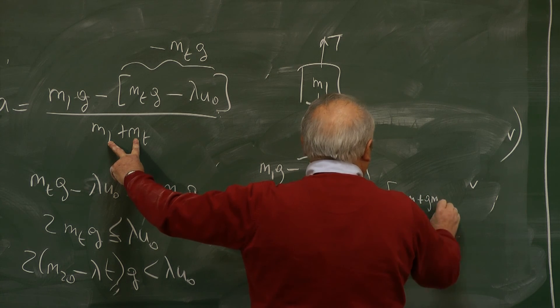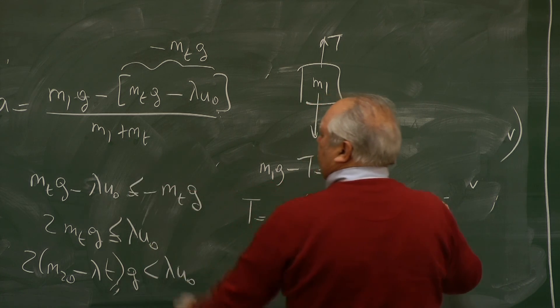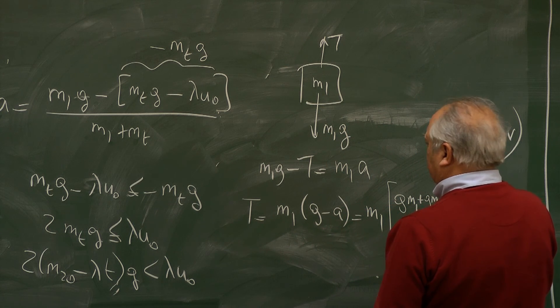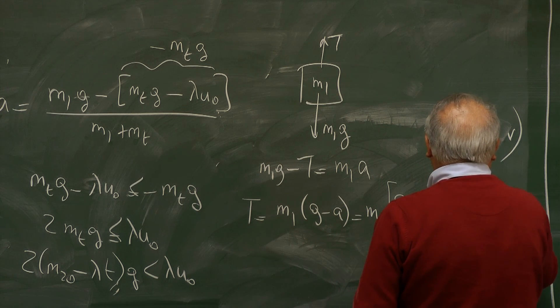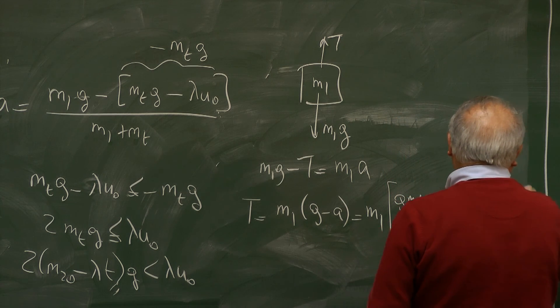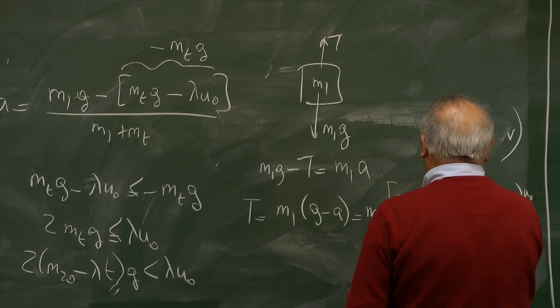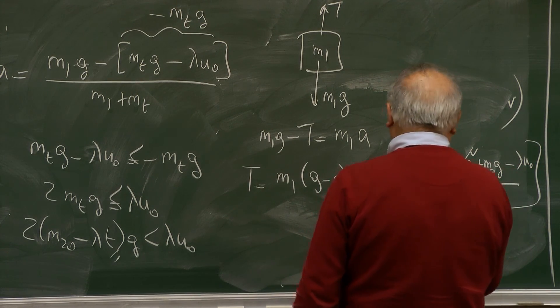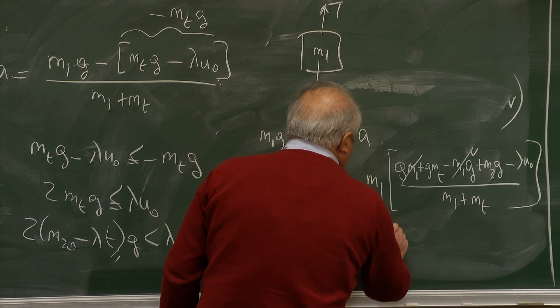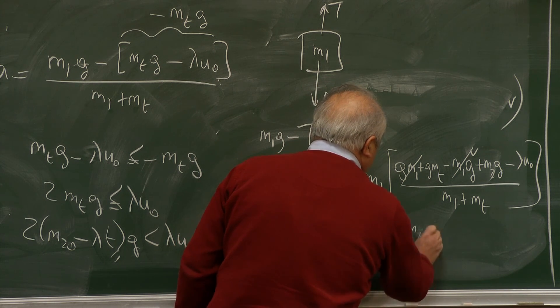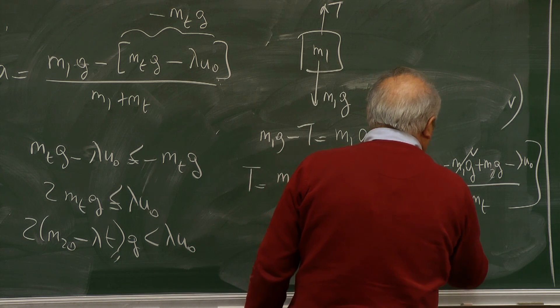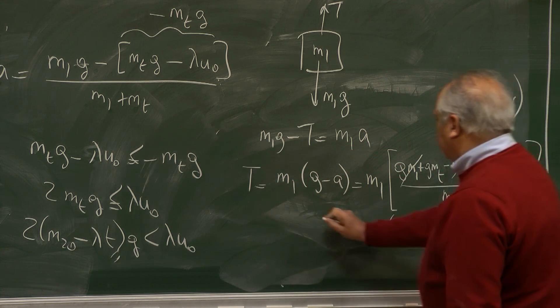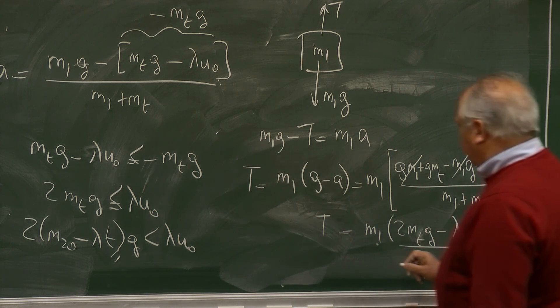So T equals M1 times M2 G minus lambda U0 over M1 plus M2. M1 G cancels. So it is M1 times M2 G minus lambda U0 divided by M1 plus M2. So for tension to exist in the rope, this has to be positive.